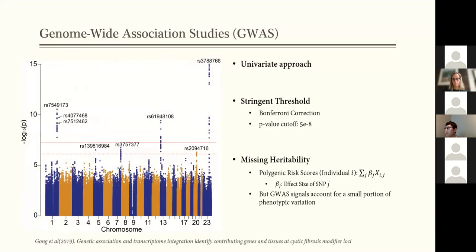So the default way to identify genetic variants and do variable selection is to do GWAS. So usually we analyze each variant one at a time, so it's a univariate approach. We apply the stringent threshold to correct for multiple hypothesis testing, and we identify a few variants across the whole genome.